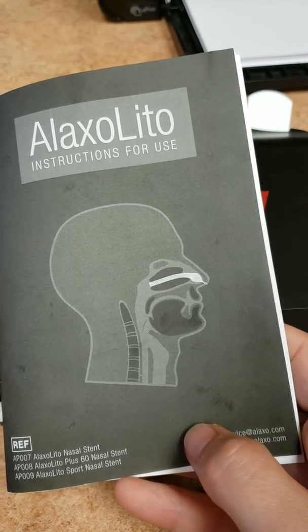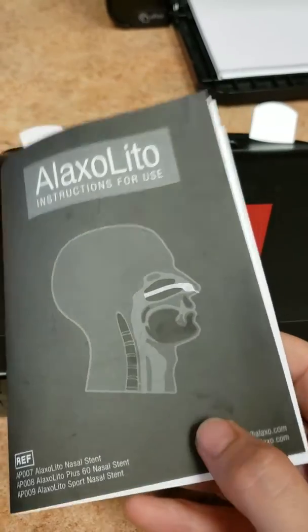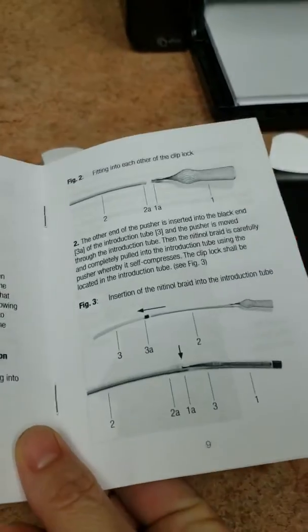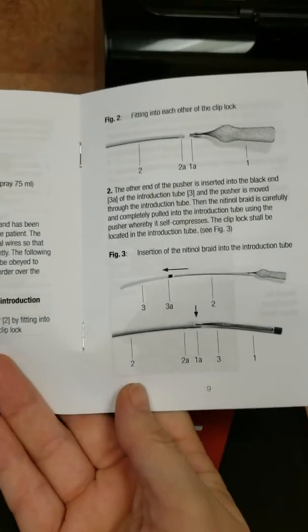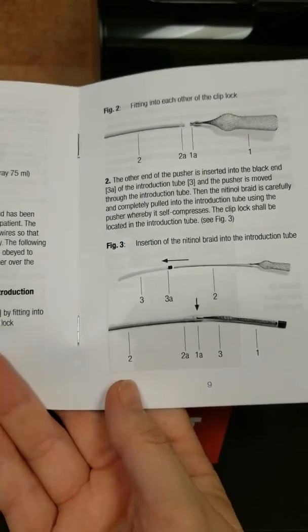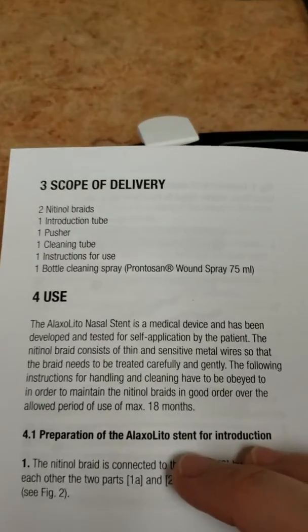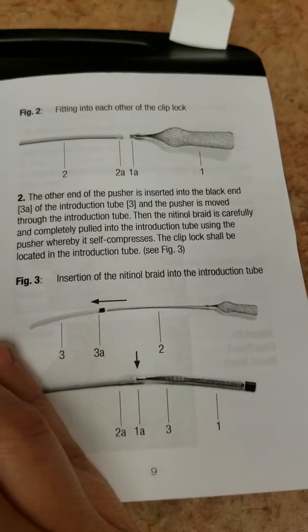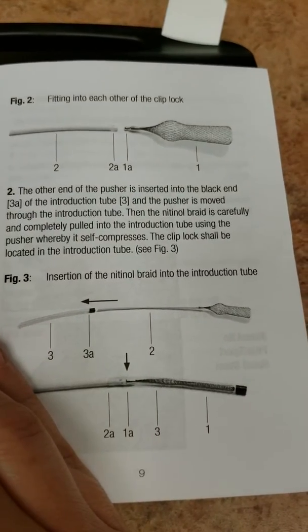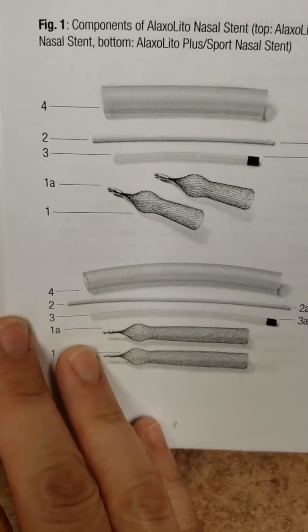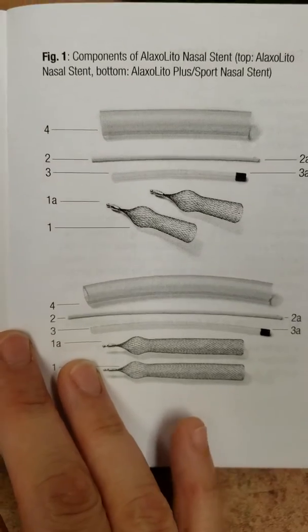So this is my personal Alexo stent that I use myself. Just wanted to give a brief overview of everything that comes with it. This is the scope of delivery: the pusher, the cleanser, and a brief description of what everything is. Mainly what I wanted to show everyone was how to put the stent onto the tubing to clean it, because it's kind of weird.